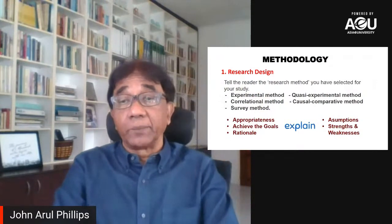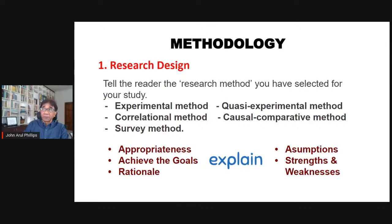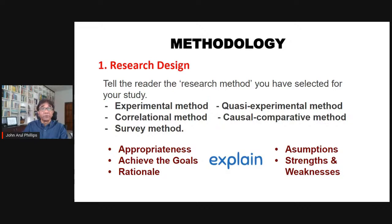The third section is methodology. First, state the research design clearly upfront: are you using experimental, quasi-experimental, correlational, causal-comparative, or survey method? A survey means giving people a set of instruments to measure different variables through self-report. Explain the appropriateness of the methodology, why it suits your research problem, how it achieves your goal, the rationale, and some assumptions, strengths, and weaknesses of the particular methodology.